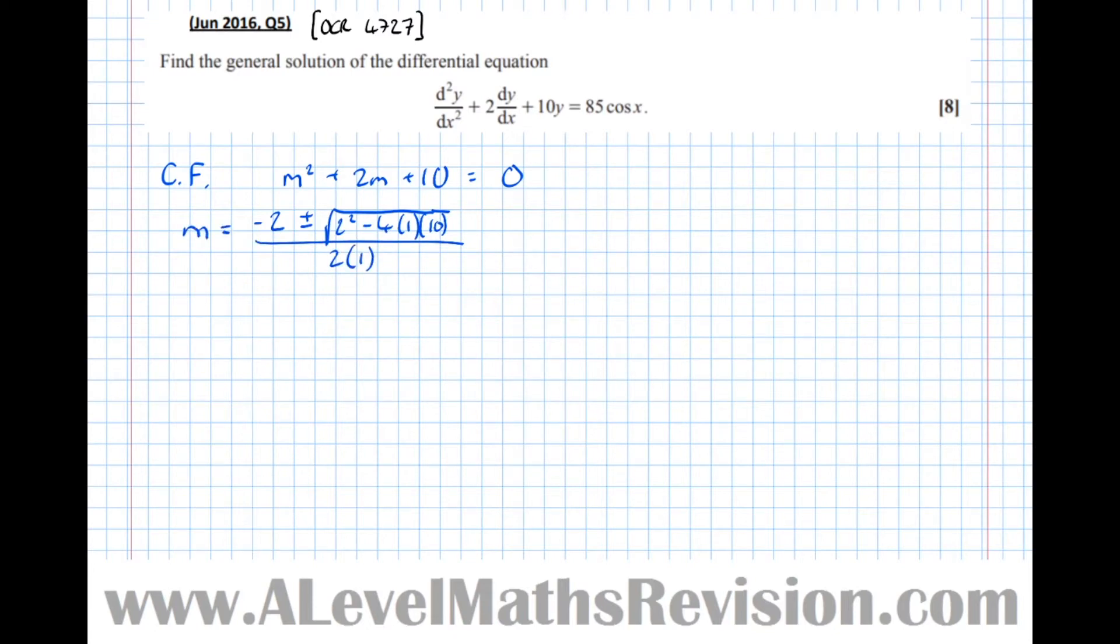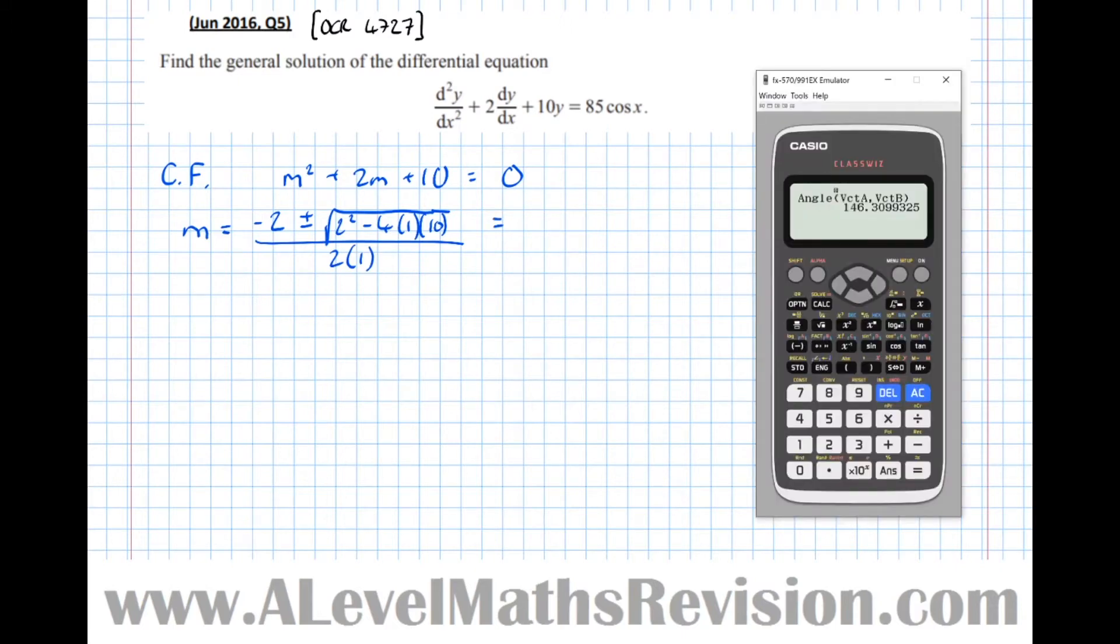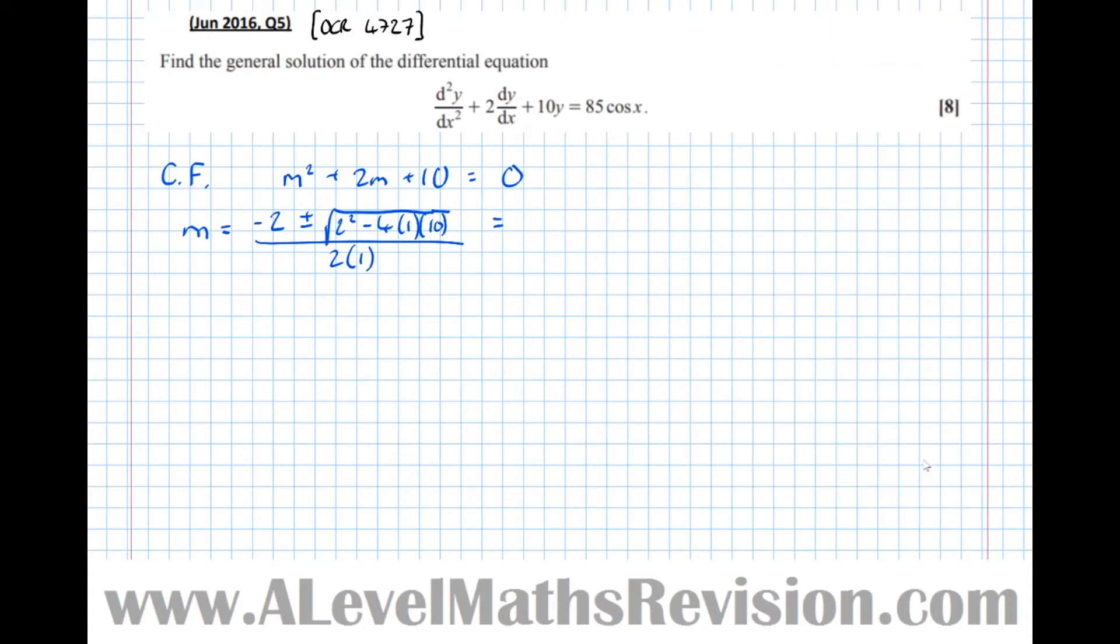So m equals that. And let's put it in the calculator. So equation solver, it's a polynomial of degree 2, and we've got 1m² , 2m plus 10. So minus 1 plus or minus 3i, minus 1 plus or minus 3i.